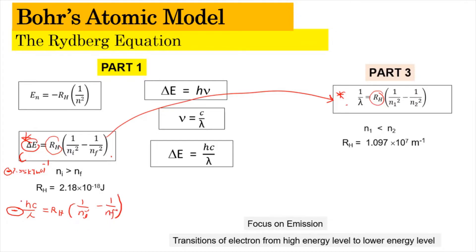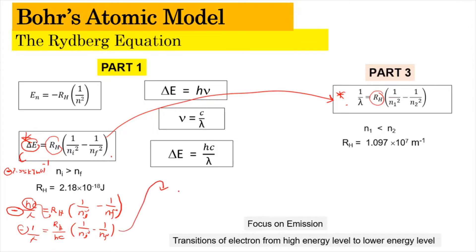Now we want to bring this expression into the wavelength form. We bring hc to the right-hand side, giving RH over hc, since hc moves to the denominator. Then 1 over Ni squared minus 1 over Nf squared is copied back. Expanding this, RH here refers to 2.18 times 10 to the power of negative 18 joules.